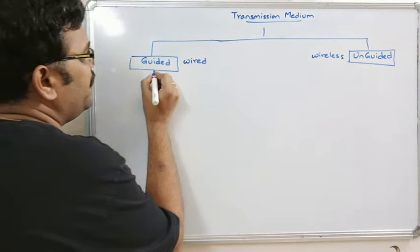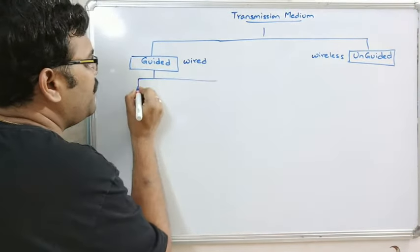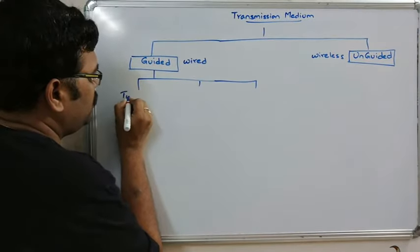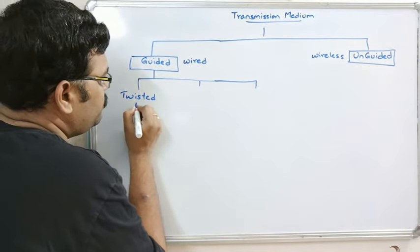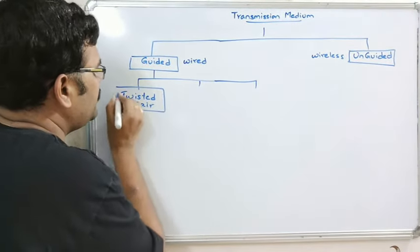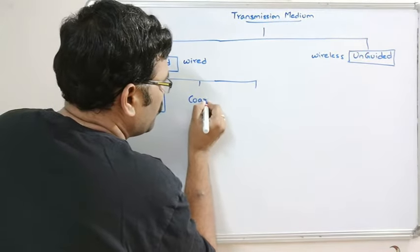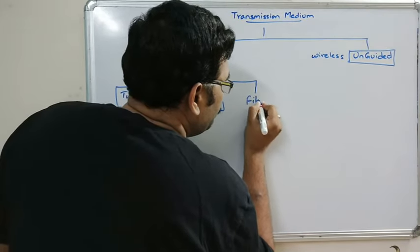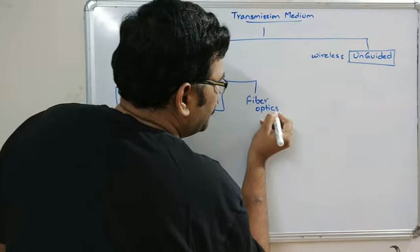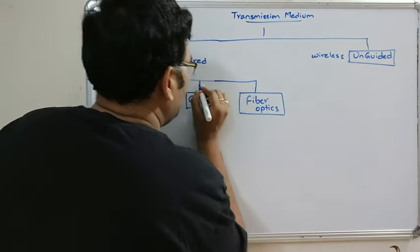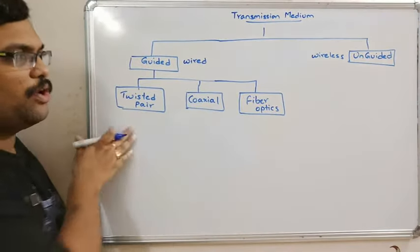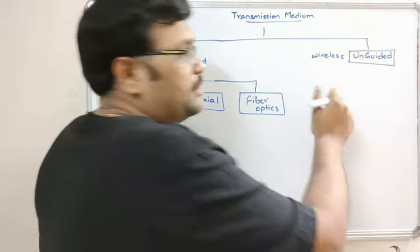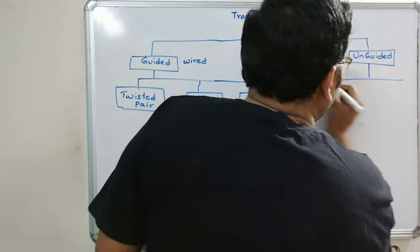Coming to guided, it is classified into three different categories: twisted pair cable, coaxial cable, and fiber optics. These are all the wired transmission media. And unguided — that is wireless — is again divided into three categories.